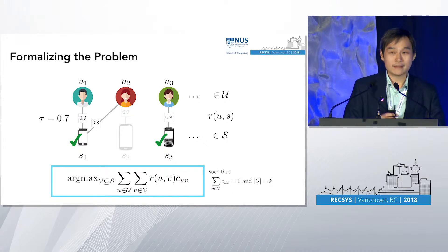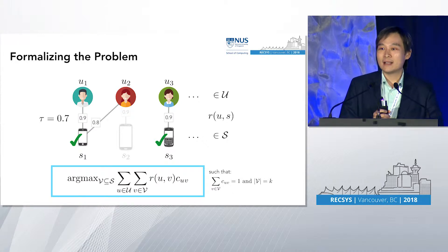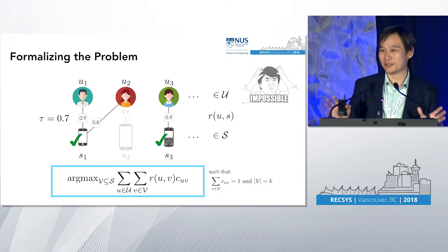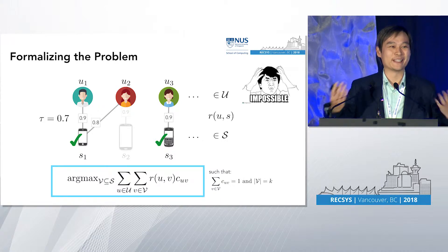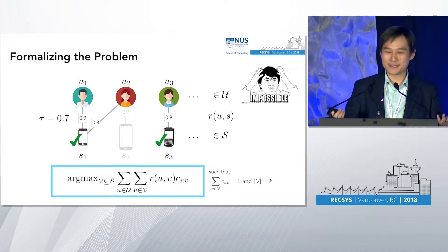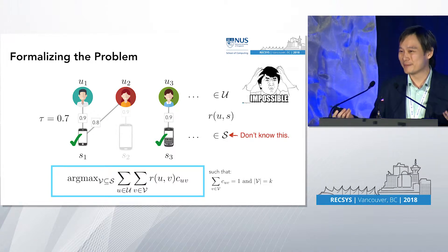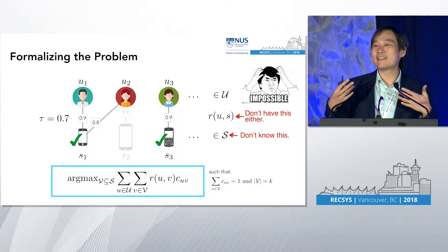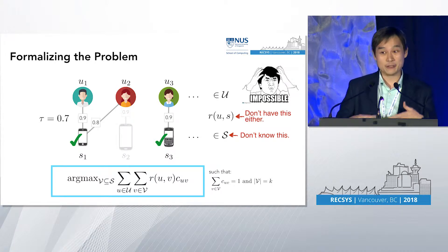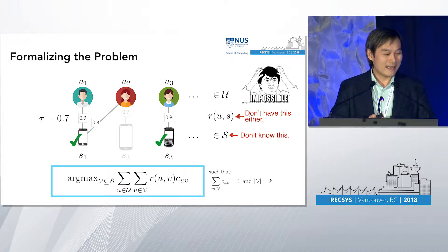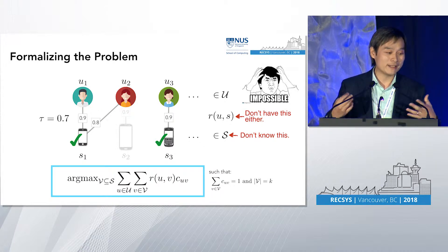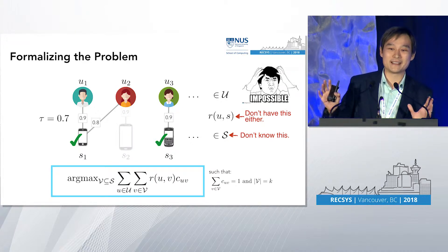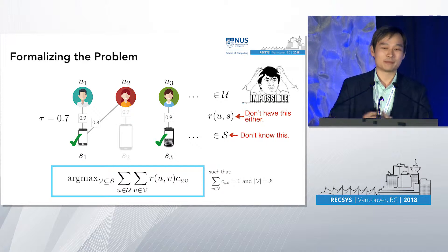This problem is actually impossible to solve. Why? Number one, we don't know what the set of all possible items are — users can't rate items that don't exist, so you don't have the rating function either. And then I'm proposing to do maximum weighted coverage, which is an NP-hard problem over a set which doesn't exist yet. So this is a really impossible problem to solve.